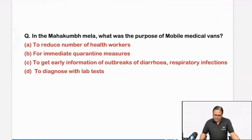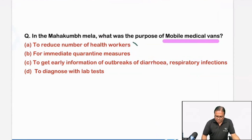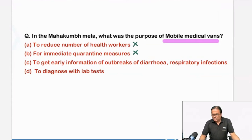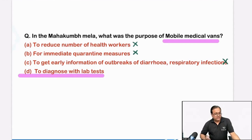There was a question on Mahakum Mila — what was the purpose of mobile medical vans? This is an older question; mobile medical units were asked in INICET a few years ago. You can solve this logically also: it will not be to reduce health workers or to quarantine hundreds of thousands of people. Mobile van units — we have discussed in levels of prevention. The major purpose is secondary level of prevention: to diagnose with lab tests. They are fully equipped to give primary care as well as management of common emergency problems.